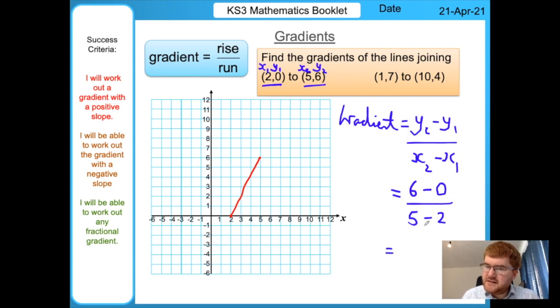We substitute. We replace y2 with 6 minus y1 with 0. We replace x2 with 5 and x1 with 2. Six minus zero is 6, five minus two equals 3, and we get 6 divided by 3 equals 2, the same answer as the previous method.